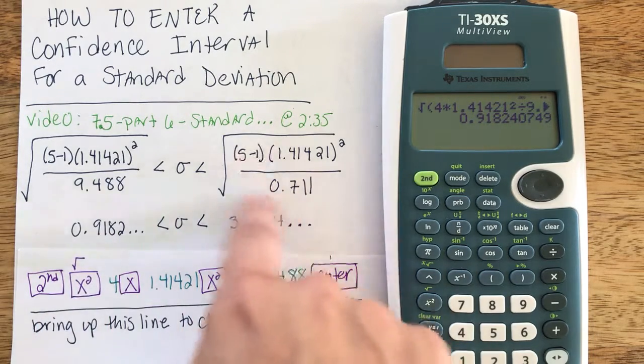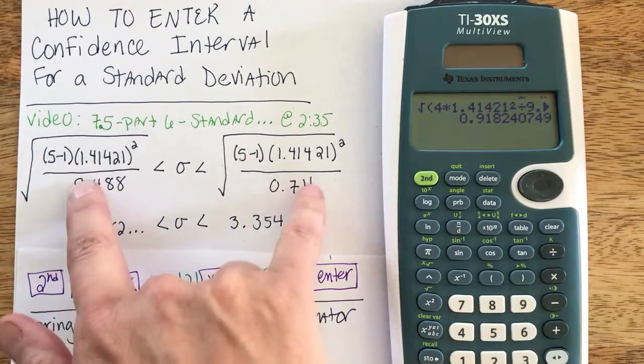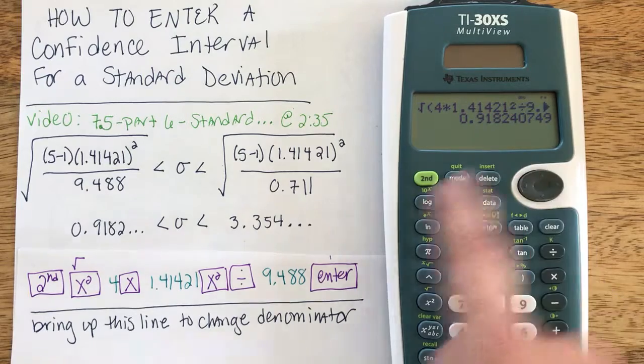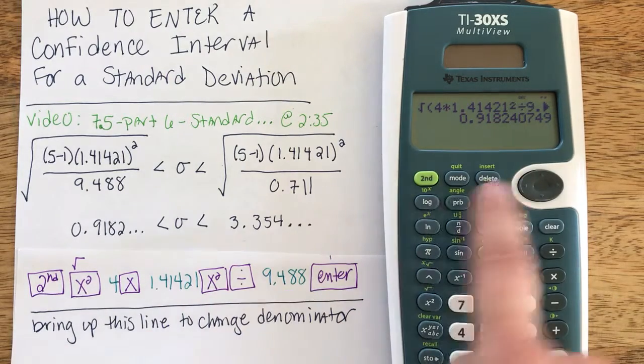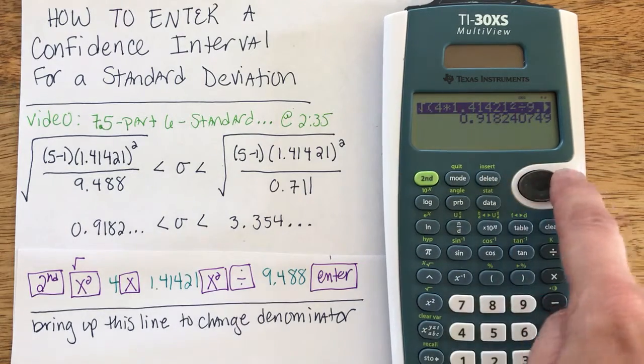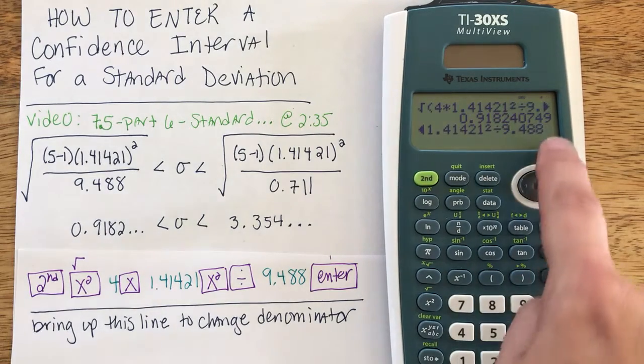I could type all of this in again, but since the numerator is identical and the only difference is the denominator, what I can do on this calculator is actually just bring up the line I typed. Arrow up once, arrow up twice. I can't do any editing in this, so I go ahead and hit enter to get my blinking cursor.